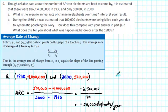So, over time, the number of elephants has been decreasing at an average rate of 50,000 elephants per year.